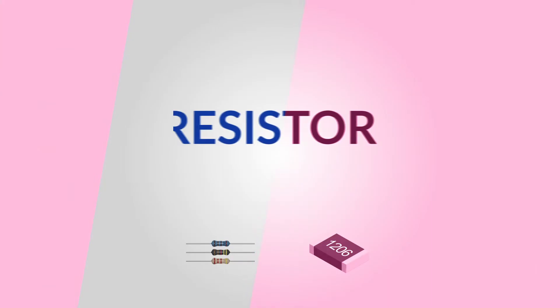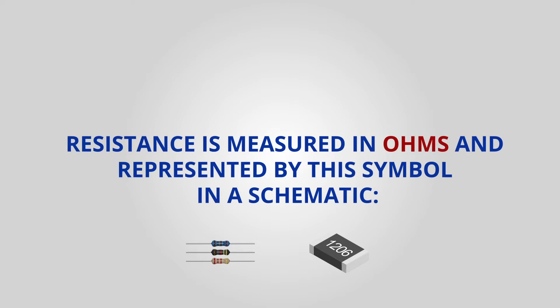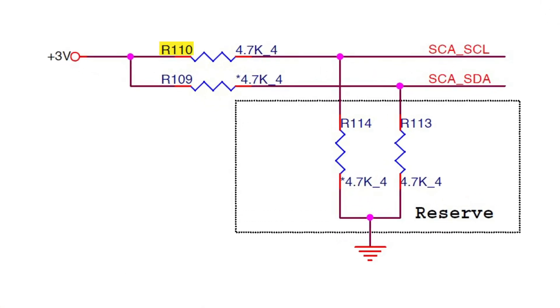Let's begin with the resistor. The purpose of the resistor is to limit the flow of current in the circuit. Resistance is measured in ohms and represented by this symbol in the schematic. Its position on the motherboard starts with the letter R — for example, R110.